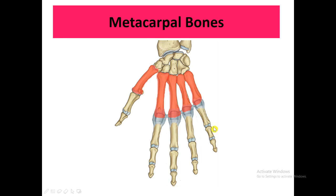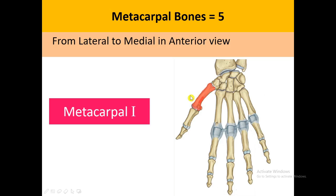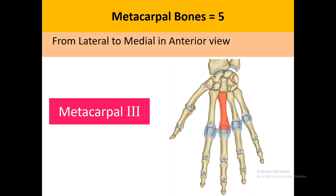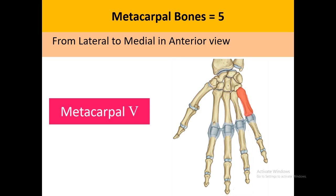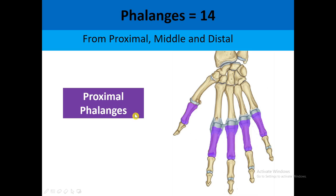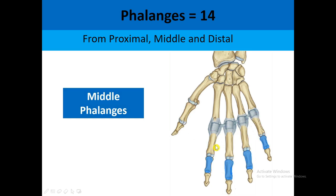Talking about the metacarpal bones, there are five in number, going from lateral to medial — that is from the thumb side to the little finger side. We have the first, second, third, fourth, and fifth metacarpal bones, total five in number.